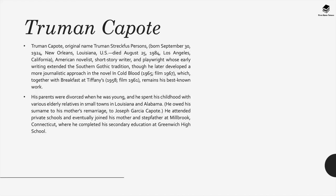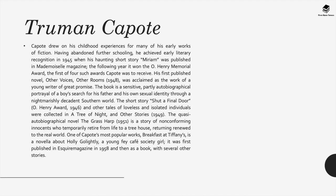His parents were divorced when he was young, and he spent his childhood with various elderly relatives in small towns in Louisiana and Alabama. He attended private schools and eventually joined his mother and stepfather at Millbrook in Connecticut, where he completed his secondary education at Greenwich High School. Capote drew on his childhood experiences for many of his early works of fiction. Having abandoned further schooling, he achieved early literary recognition in 1945 when his haunting short story Miriam was published in Mademoiselle magazine. The following year it won the O. Henry Memorial Award, the first of four such awards Capote was to receive.